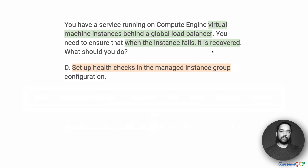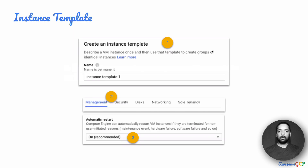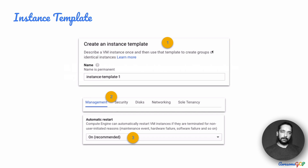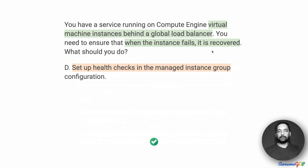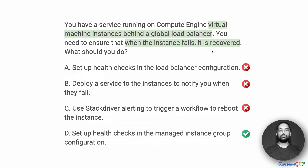Option D suggests that we set up health checks in the managed instance group. When you create a managed instance group based on a template, we can set a policy in step 3 to automatically restart the machine in case of a hardware failure, so the machine can be automatically brought back up. It is also possible to add a health check beyond the auto-healing we already saw, to configure when you want the machine to be restarted. Given all of that, option D is the best option — setting up health checks in the managed instance group configuration — because that actually solves the problem of recovering a failed instance.